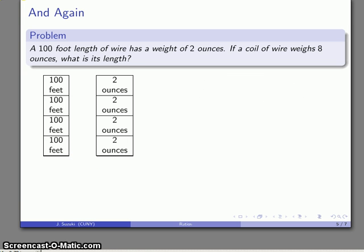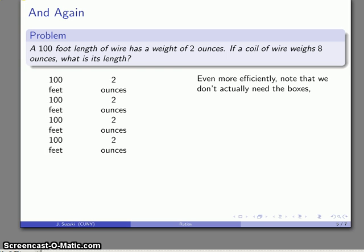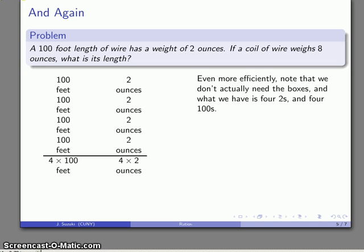Here's a slightly different way, an even more efficient way of looking at this problem. I don't actually need to write the boxes. Those boxes are there, they're nice, they're useful, they're visual, but they're not really necessary. What's important is, I have a whole bunch of ounces over here, I have a whole bunch of lengths over here. What I actually have on the right is four twos, so I can write that as four times two. Over on the left, I have four hundreds, so I can write that as four times a hundred. The thing to notice is that I have as many things here as I have over there. The multiplier here is going to be the same as the multiplier over there. That suggests a very general approach to solving any problem involving ratios.